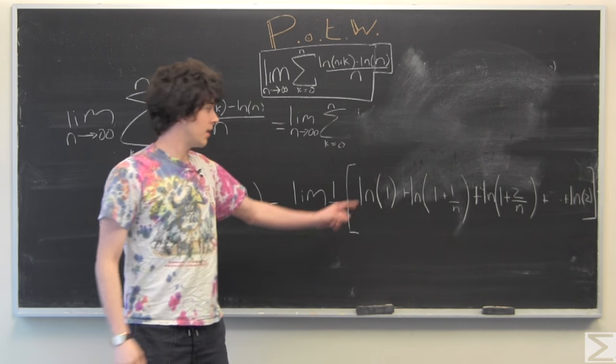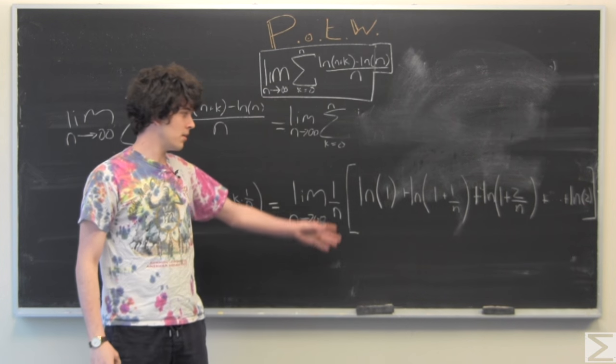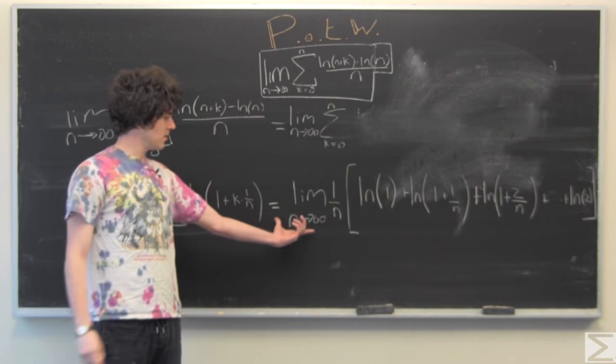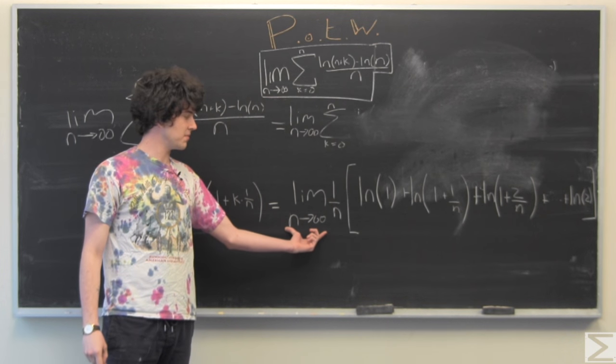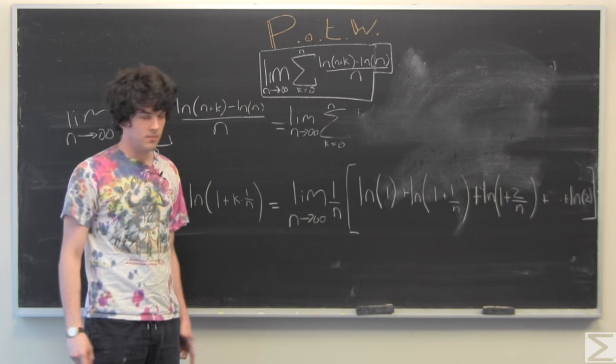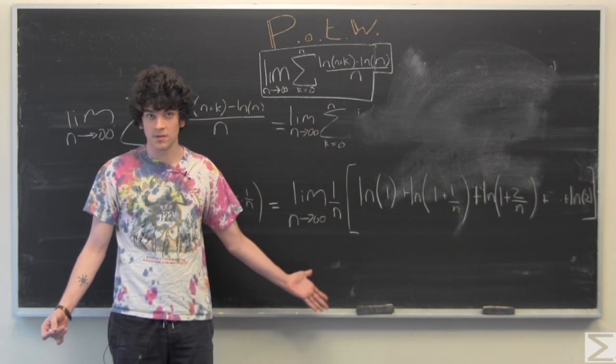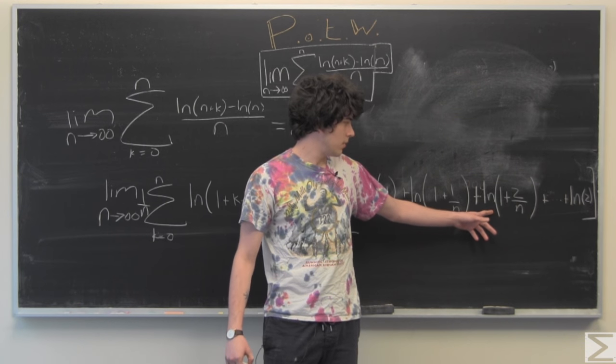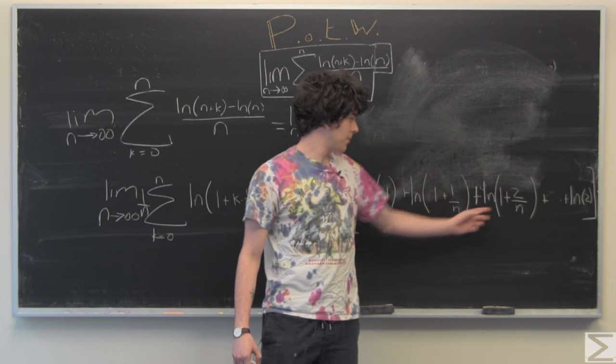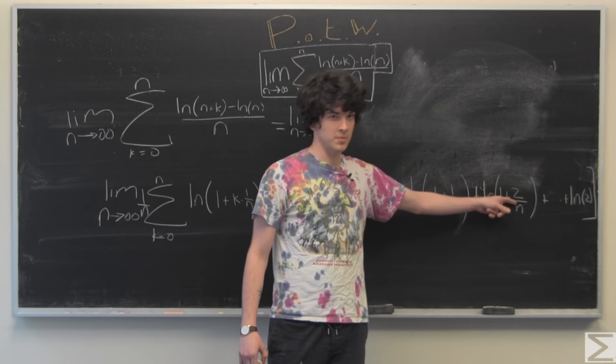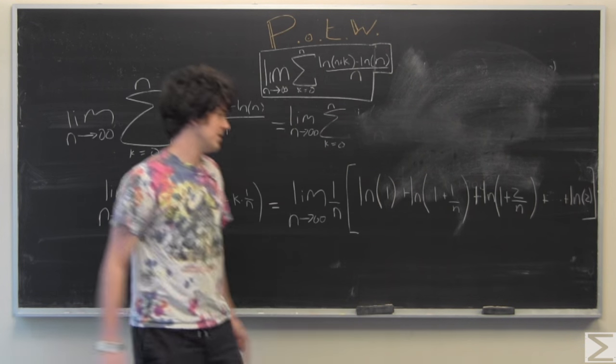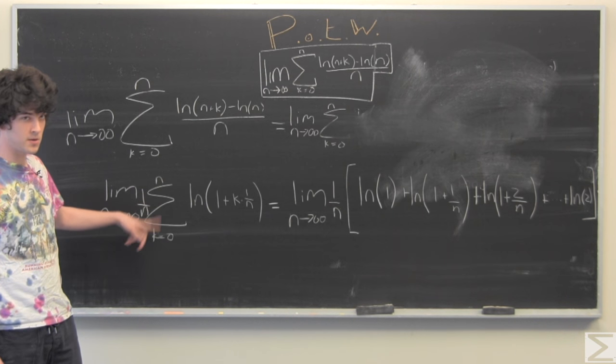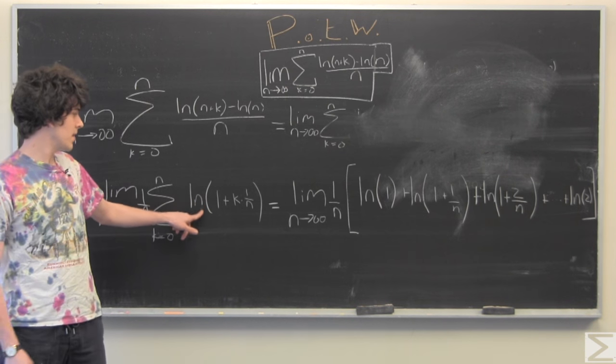So cool, we have our natural log of 1, natural log of 1 plus a little bit because this, and it approaching infinity, makes 1 over n be an infinitesimal practically. We have ln of 1 plus a little bit plus another little bit, so we have two little bits. And then of course, as k goes to n, as k reaches the end of our index, we'll have ln of 2.